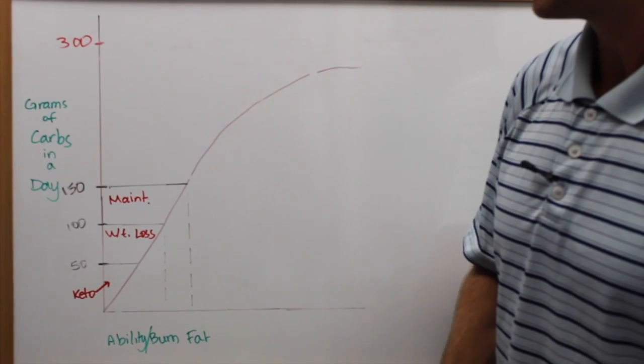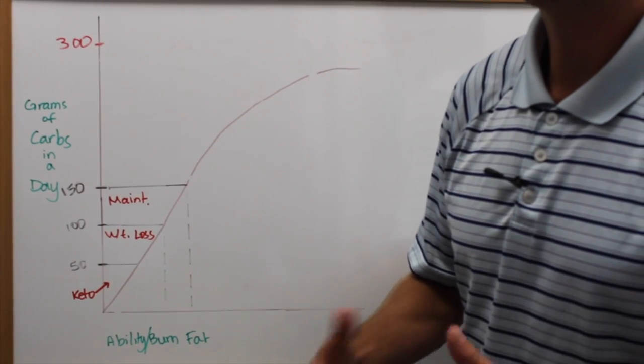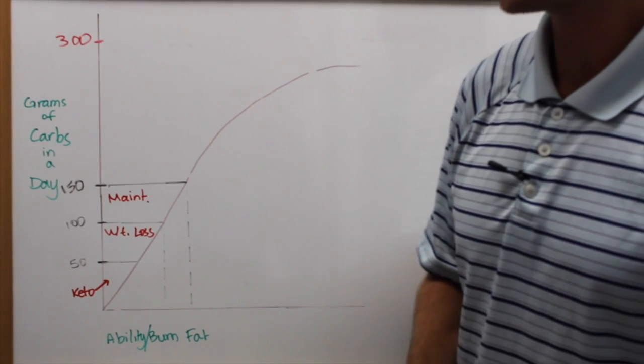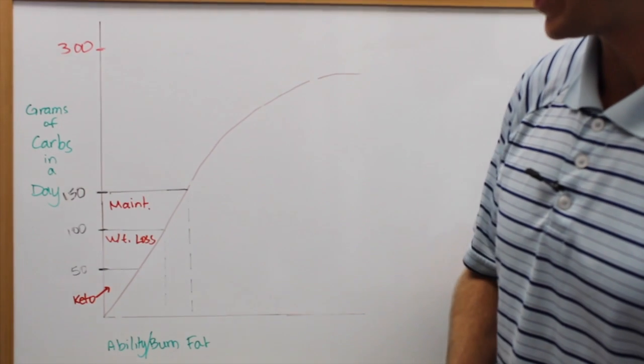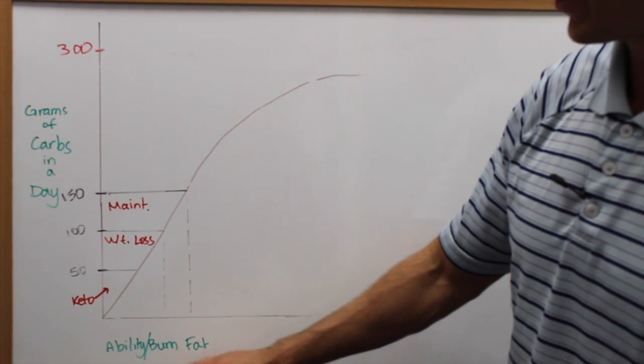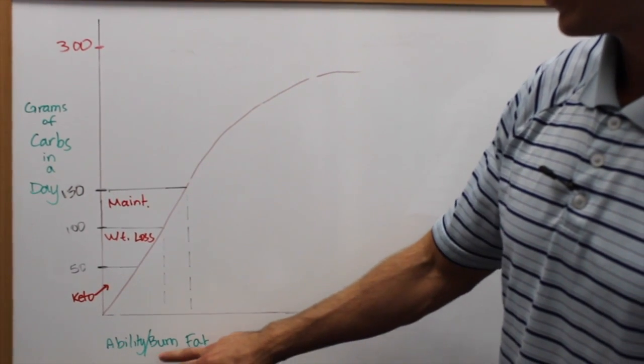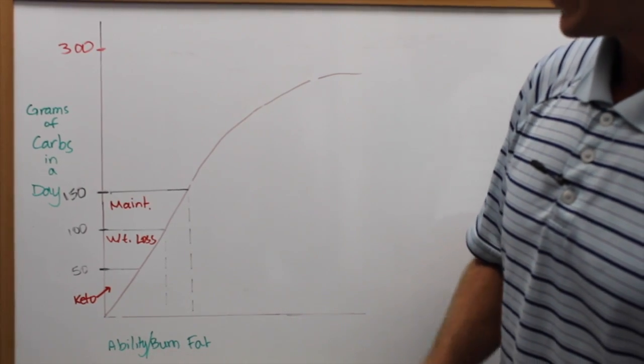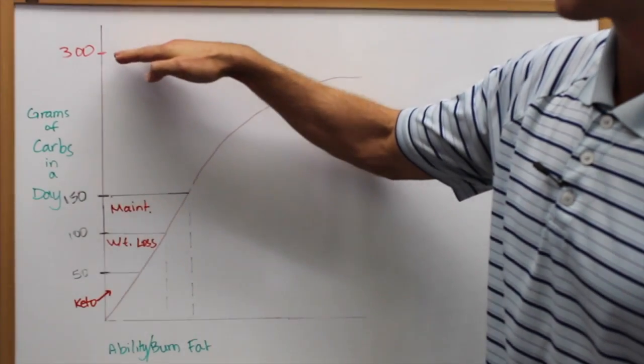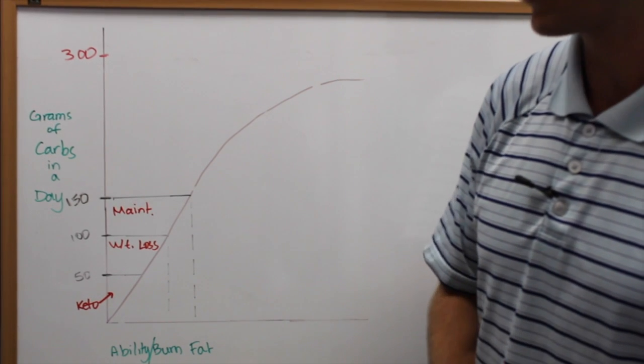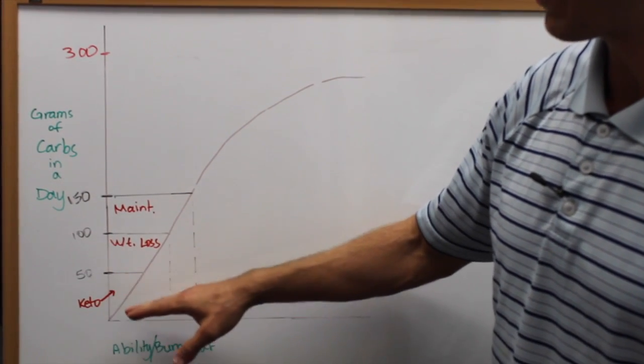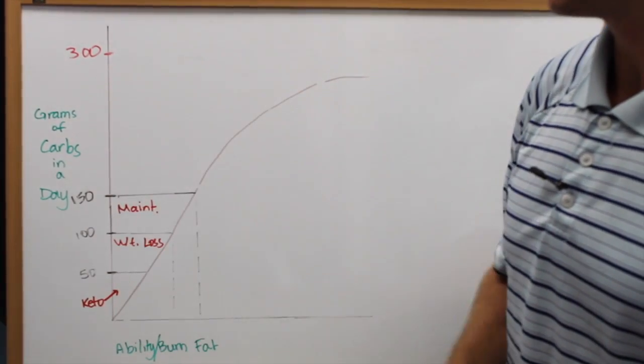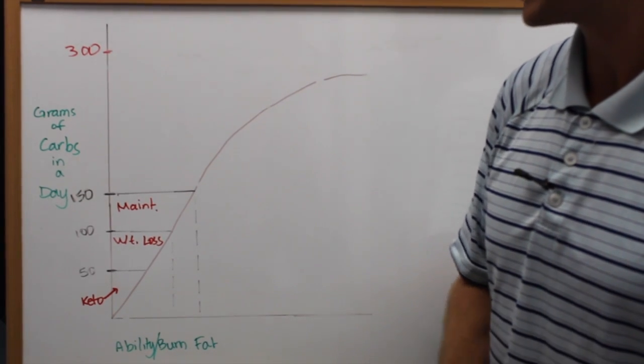Now this graph is going to show us the most important number you need to know in your daily consumption of food, which is your grams of carbs in a day. And on the bottom of the graph, you're going to see it says ability to burn fat. At the top of the spectrum, we have to have up to 300 grams of carbs in a day, which are astronomical. At the bottom, we have down to zero. And we have three different categories. When you're anywhere between 150 to 300 carbohydrates in a day of consumption,